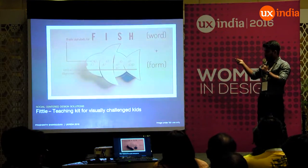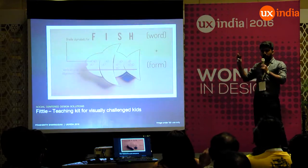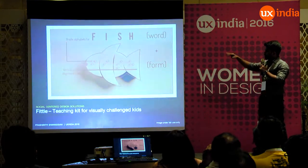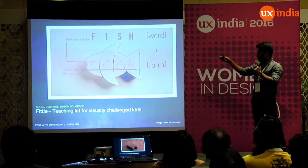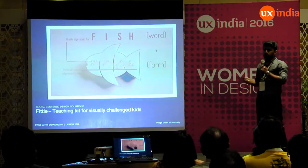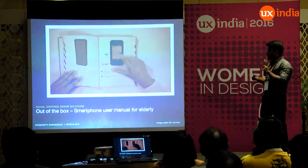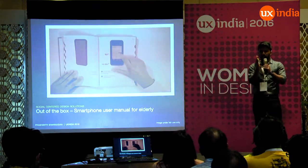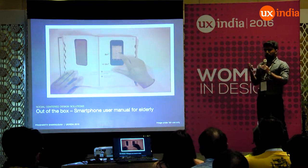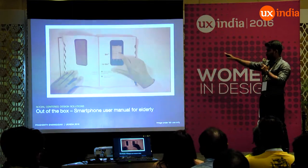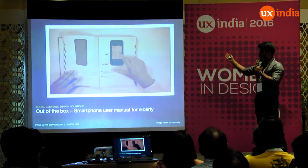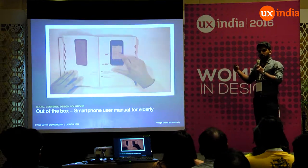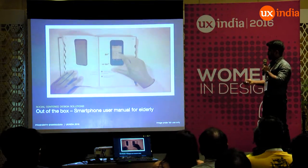This is another interesting project called Fiddle, for visually challenged kids. It combines plain language with font shapes — for example, the word FISH is shaped like a fish, so kids can easily understand and learn. This is called Out of the Box — a smartphone user model for elderly people. It is very much focused on elderly people: you place your phone in the center of a hanging placeholder and flip pages to learn how it works. These are all very simple yet creative solutions.